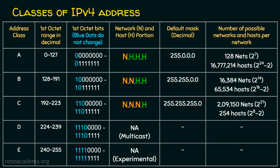In class A, we have a large number of hosts per network but a limited number of networks. Class B has a moderate number of networks and a moderate number of hosts per network. Class C has more networks, but each network has only a limited number of hosts. In all cases, we subtract two from the number of hosts, because the first address is the network address and the last address is the broadcast address.